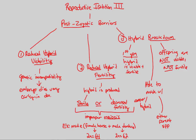That covers our reproductive isolation mechanisms. The core idea is to prevent gene flow between different species. Even though gene flow technically occurred post-zygotically, it doesn't extend beyond maybe one generation before stopping. Overall, these mechanisms prevent two different species from interbreeding and producing viable offspring, because that's not how speciation works under the biological species concept. And that concludes reproductive isolation.